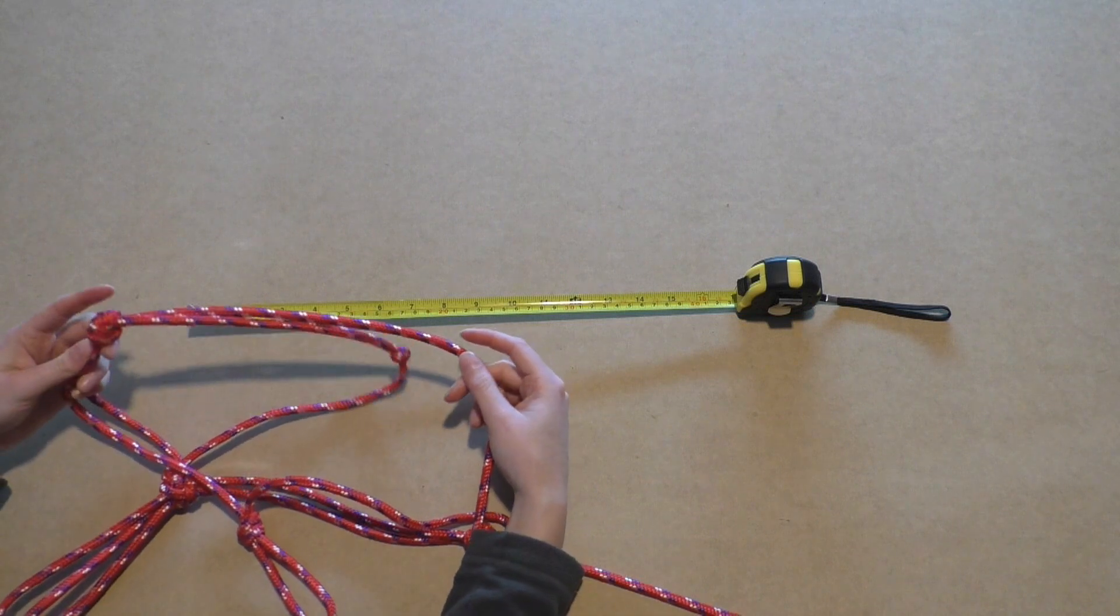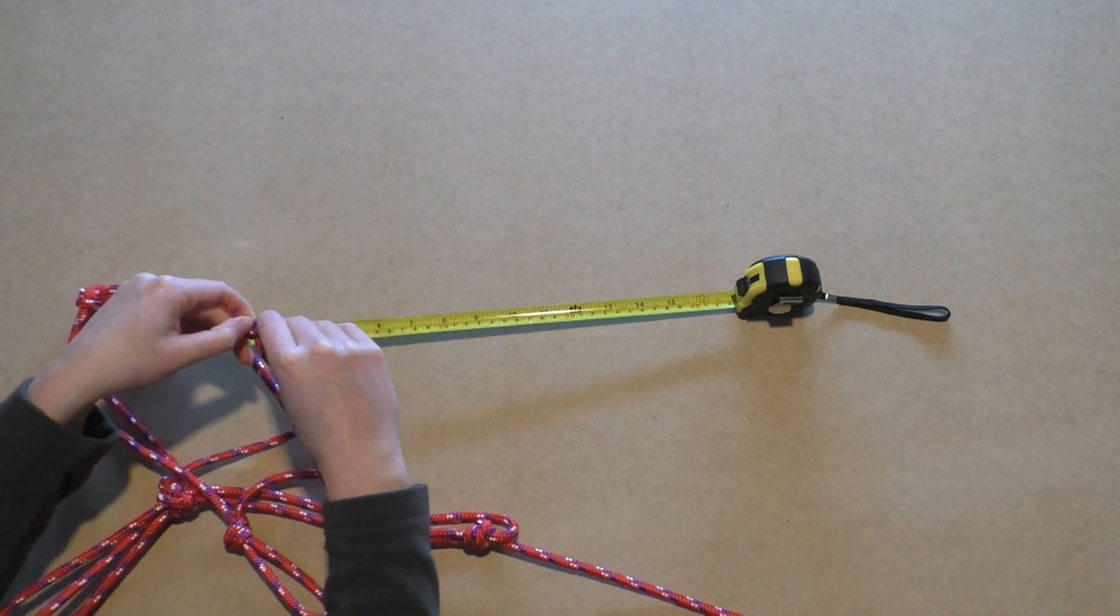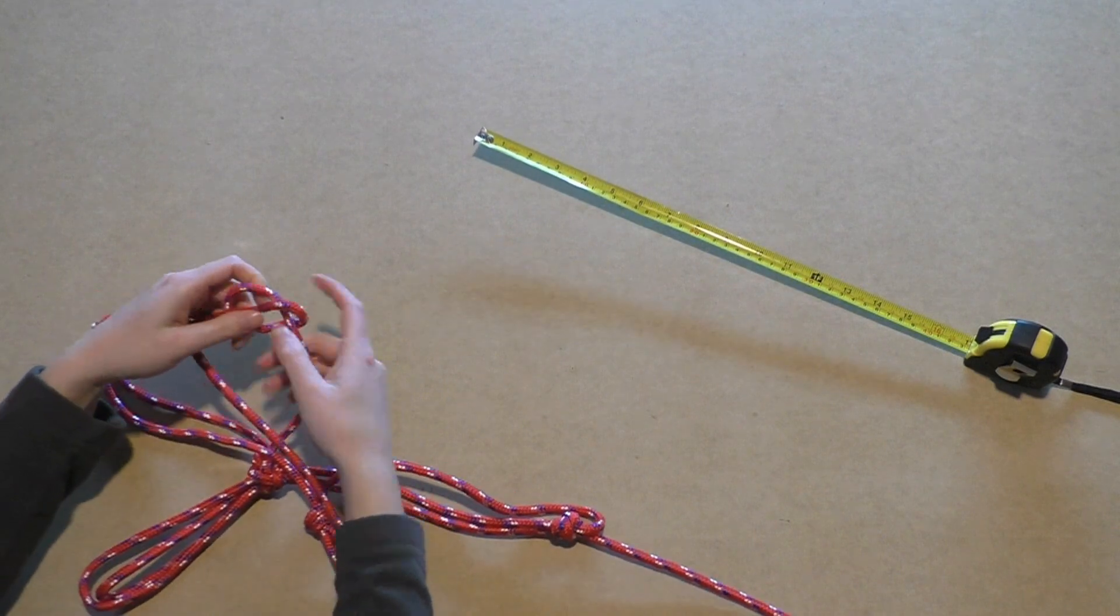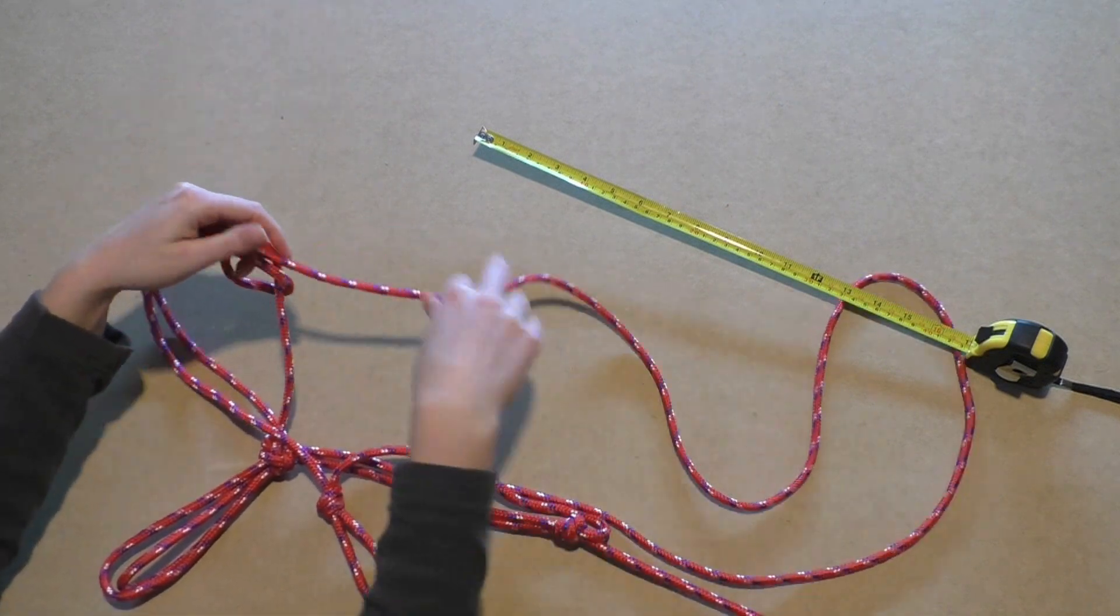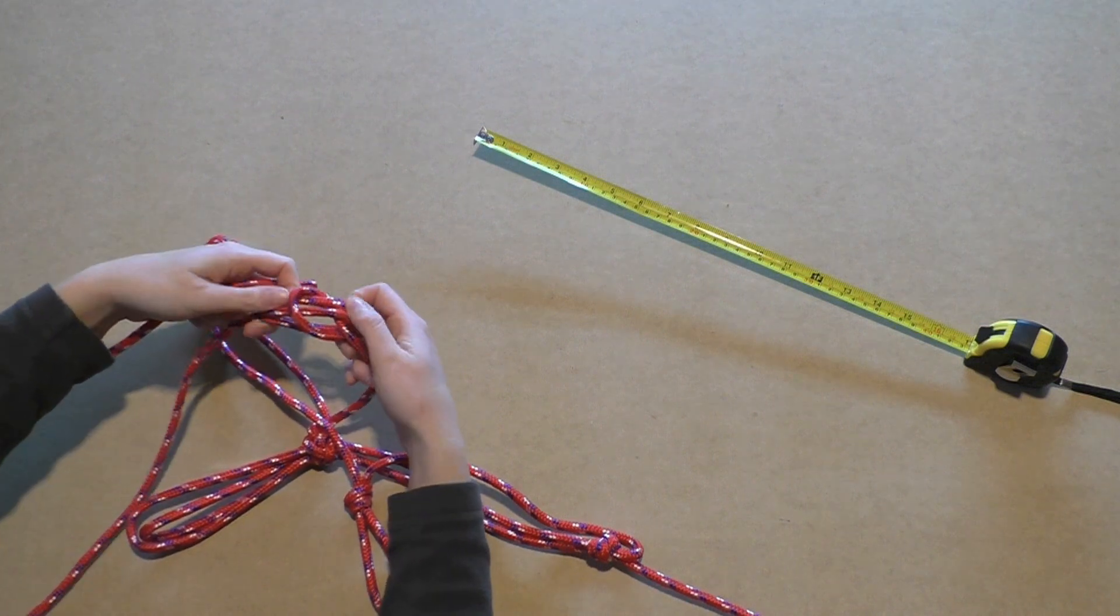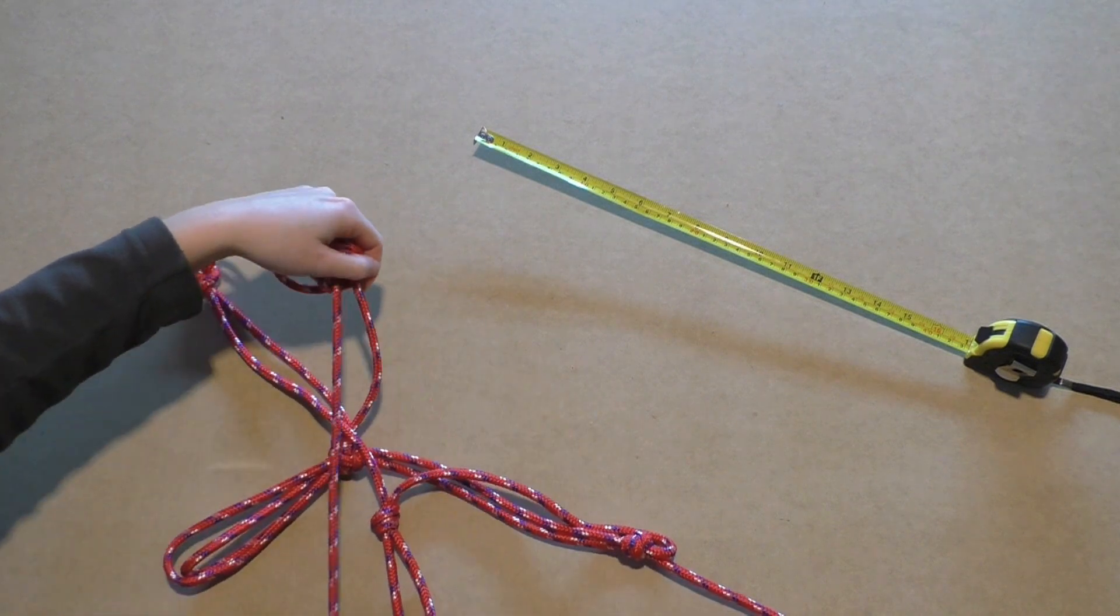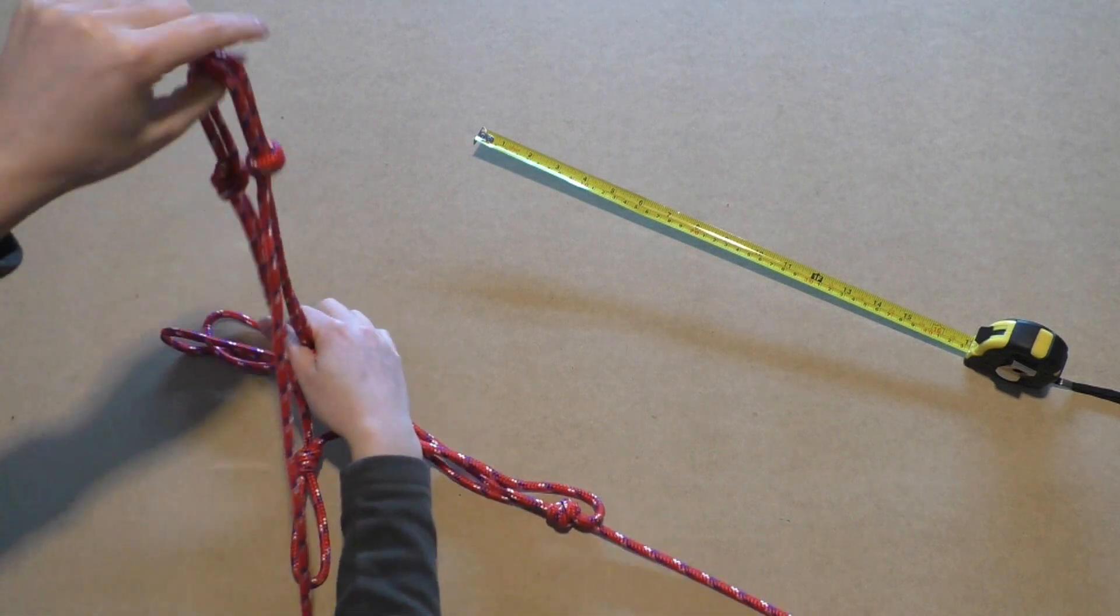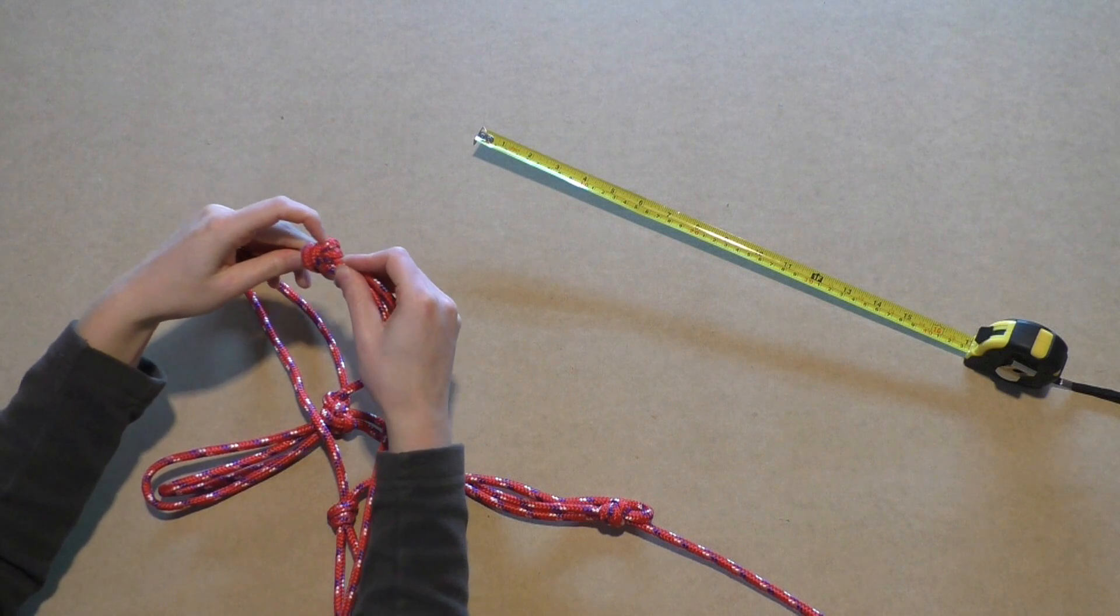Follow the noseband to the next overhand knot and feed the rope through that one as well. Make sure that after doing this, both overhand knots on the noseband are still at a similar distance from the Fyodor knot.